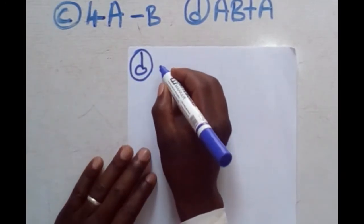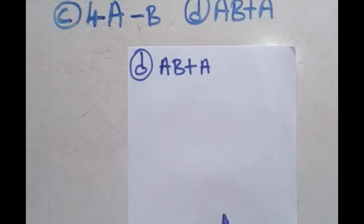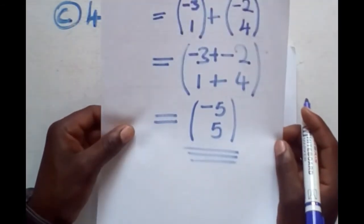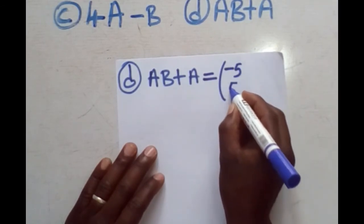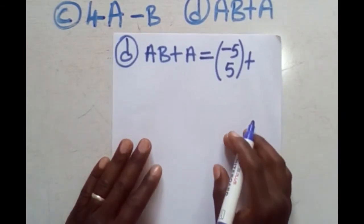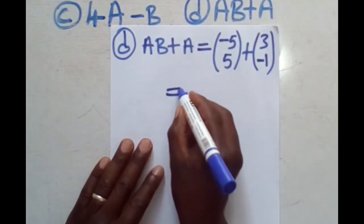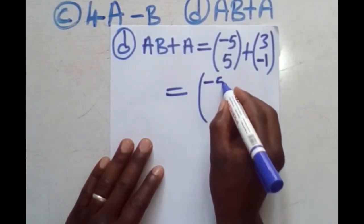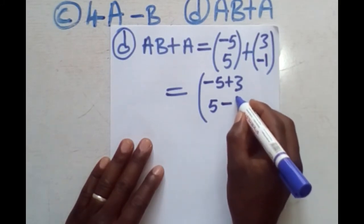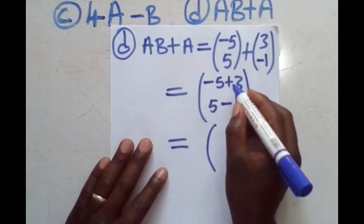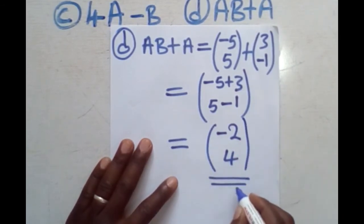For part D, we find AB + A. We already found AB = (-5, 5). So we substitute: (-5, 5) plus A, which is (3, -1). That gives -5 + 3 = -2 on top, and 5 + (-1) = 4 on the bottom. Therefore AB + A = (-2, 4).